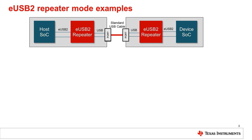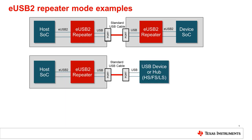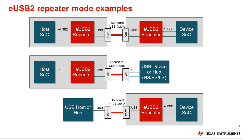This leads us to eUSB2 repeater mode. Any SoC that supports eUSB2 can be paired with an external eUSB2 repeater to maintain interoperability and backwards compatibility with the full USB ecosystem of host hubs and devices. eUSB2 repeaters can be configured as host repeaters, device repeaters, or even dual-role device repeaters that swap based on commands from the SoC. The USB interface of eUSB2 repeaters can be paired with any standard USB connector and can connect to USB host, hubs, and devices, as well as other eUSB2 repeater-based applications.